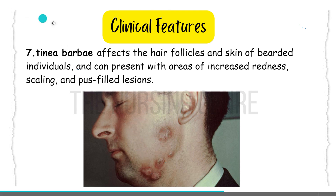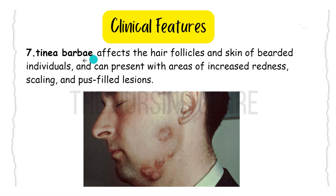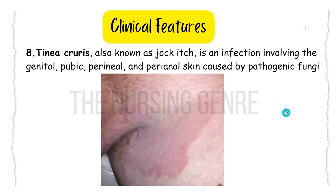Tinea barbae affects the hair follicles and skin of the bearded areas in men. We can see increased redness, scaling, and pus-filled lesions in the affected beard region.